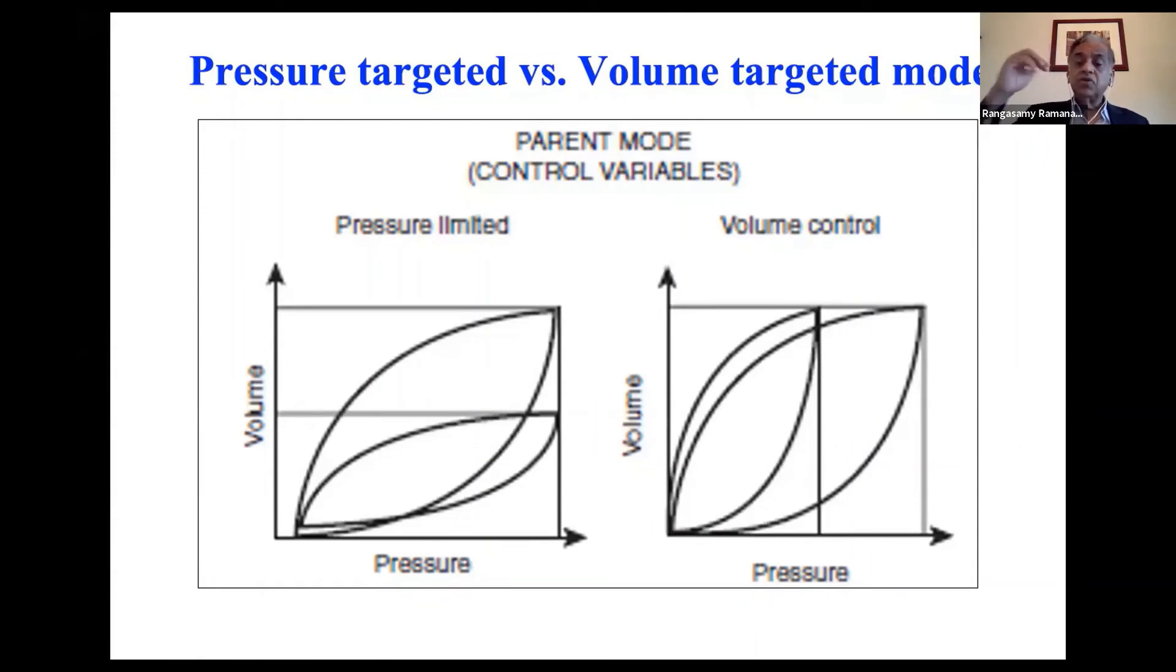Some people routinely set the PIP at 50 centimeters, 5-0. Because even if the PIP is 50, you are controlling the tidal volume and you will not cause volume trauma. But you really need to think about why the ventilator is using so much pressure to deliver that volume.